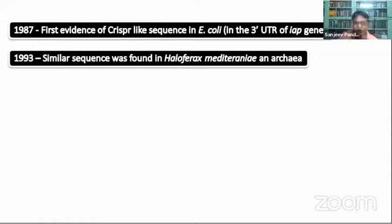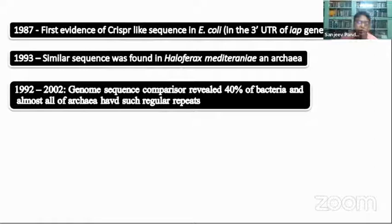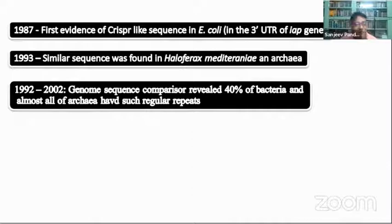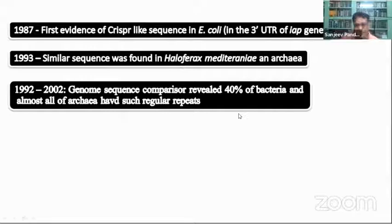Then again in 1993, in an archaeon — an extremophile called Haloferax mediterranei — a similar kind of repeated DNA element was found in its chromosome. During the period of whole genome sequencing from 1992 to 2002, a lot of bacteria were sequenced, as well as human, Drosophila, rice, Arabidopsis, and C. elegans genomes. When these sequences were compared with databases, it was found that 40% of all bacteria and almost all archaea have this kind of sequence repeat in their genome, but what it was doing remained unknown.